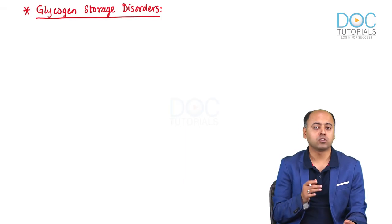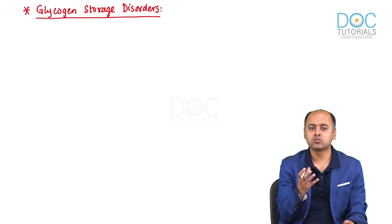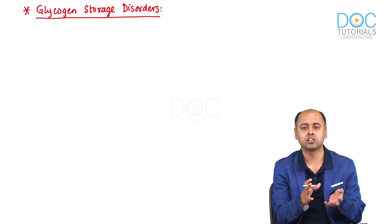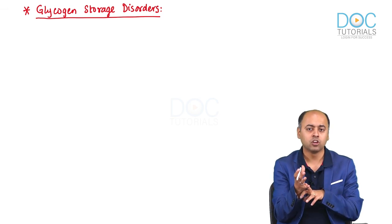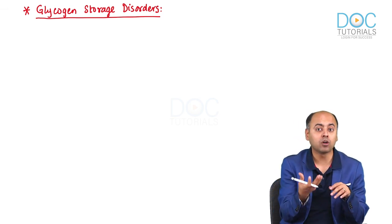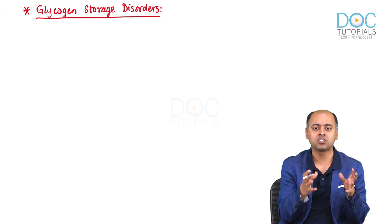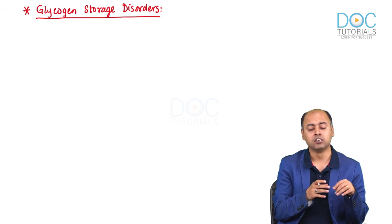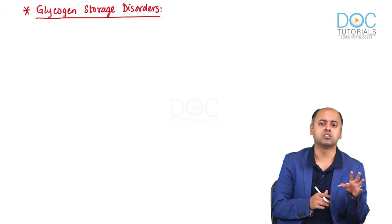We are going to be talking about glycogen storage disorders. In glycogen storage disorder, two things can happen: either there are abnormal deposits of glycogen, or there will be synthesis of abnormal glycogen. Either the normal glycogen is getting deposited in large amounts, or the synthesis of abnormal glycogen is occurring. Both of them will result in glycogen storage disorder.